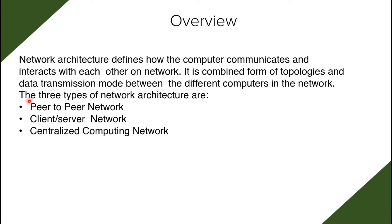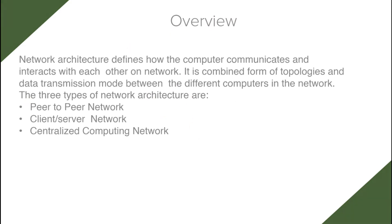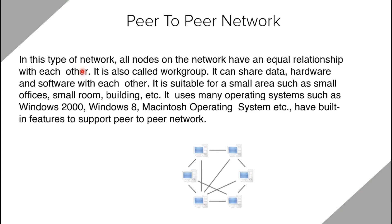The first one is peer-to-peer network, the second is client-server network, and the third is centralized computing network. We will be discussing all of those. Let's start with peer-to-peer network architecture. In this type of network, all nodes on the network have an equal relationship with each other.